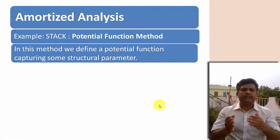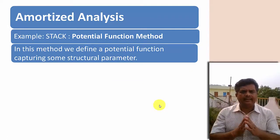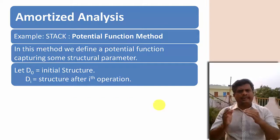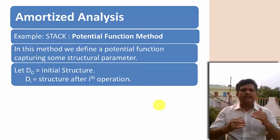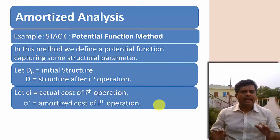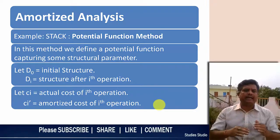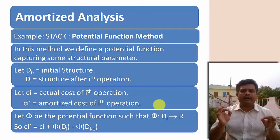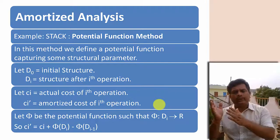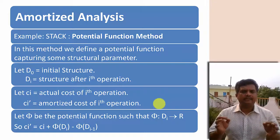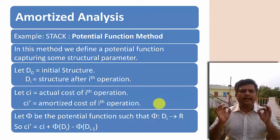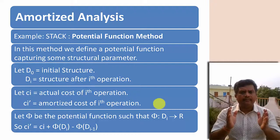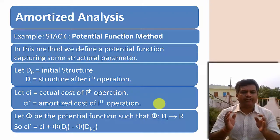Let us take the potential method to understand stack operations. In this method, we define a potential function capturing some structural parameter. Let D0 be the initial structure and Di the structure after the ith operation. Let ci be the cost of the ith operation and ci' the amortized cost. Let φ be the potential function such that φ maps Di to a real number. Then ci' = ci + φ(Di) − φ(Di−1), where φ(Di) is the potential at Di and φ(Di−1) is the potential at its previous state.